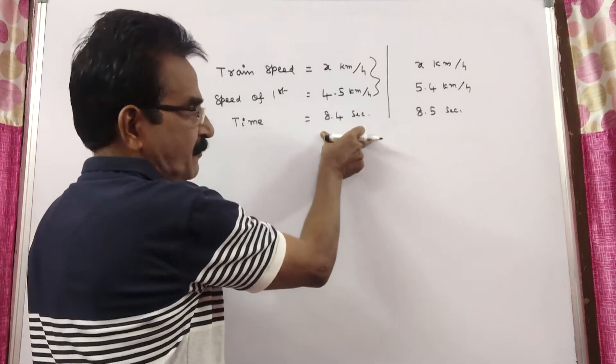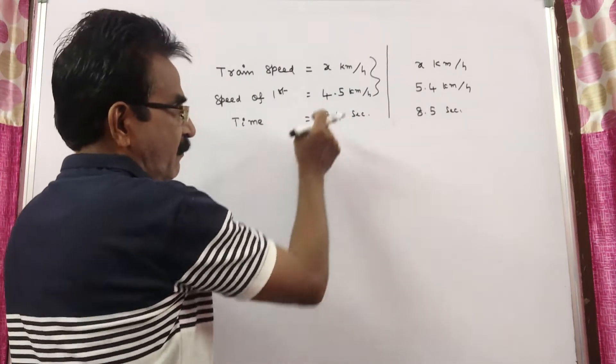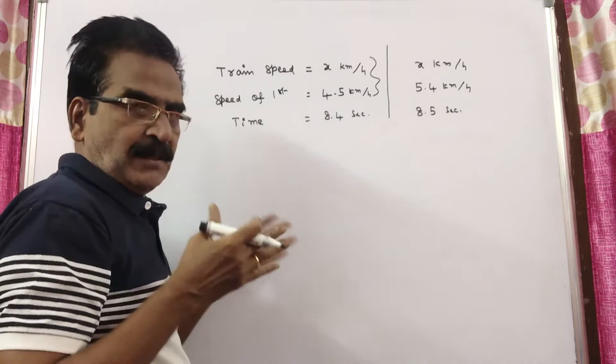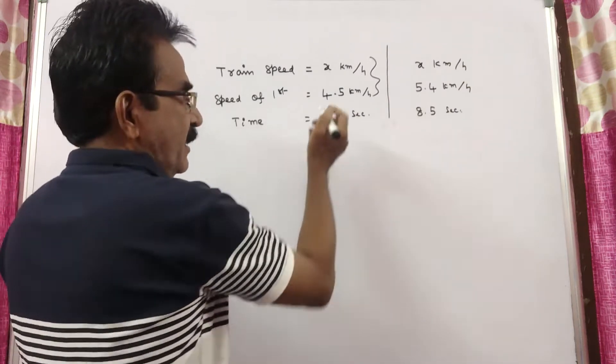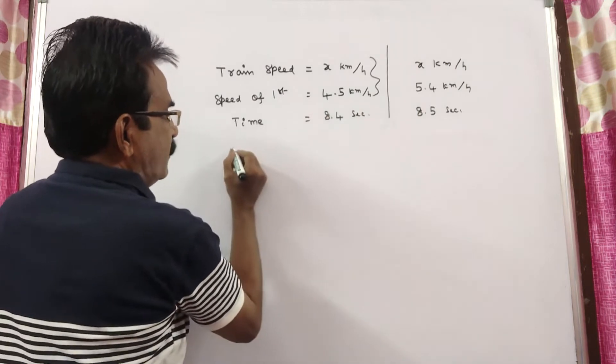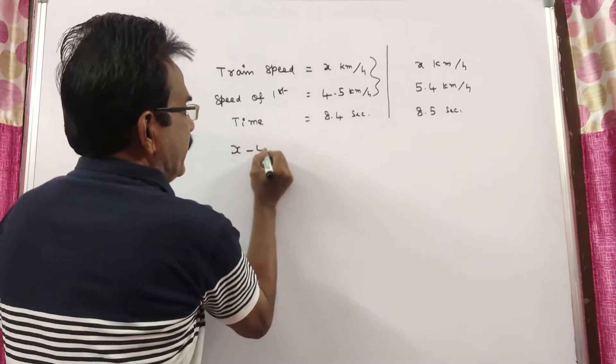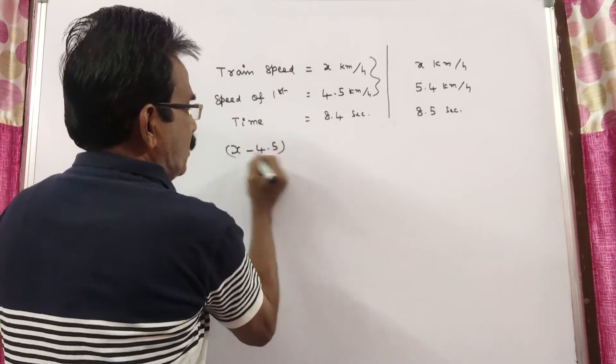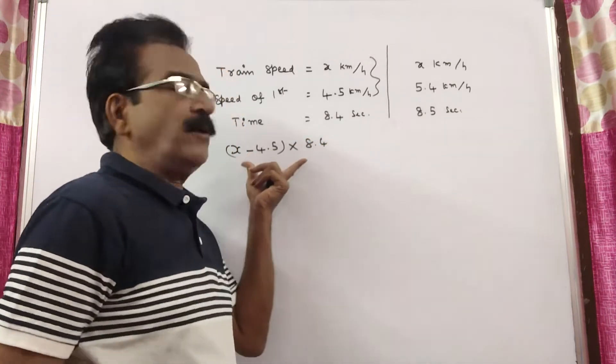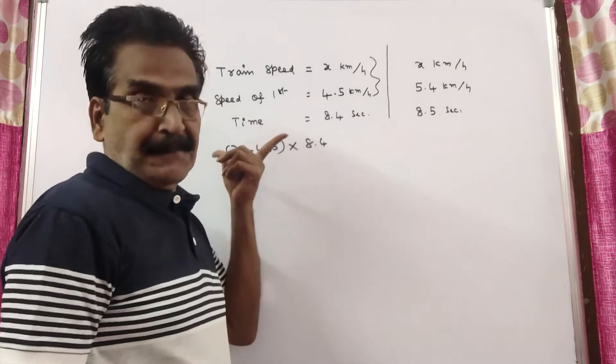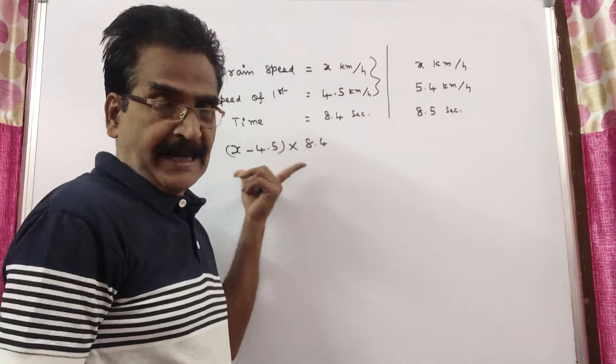Here, the length of the train. Length of the train means velocity into time. Velocity means relative velocity. Since the man is moving in the same direction of the train, relative velocity is x minus 4.5. x minus 4.5 is the velocity into time of 8.4 seconds. So, here we are getting the length of the train.